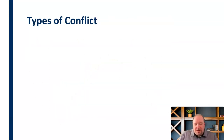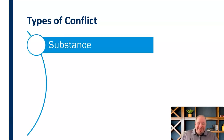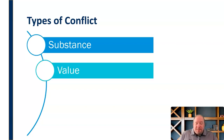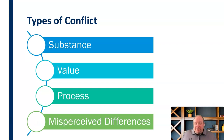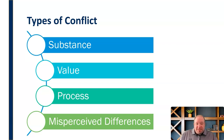There are a couple of different types of conflict. First, you can have conflict over substance — the actual details of a task or debate. You can have conflict over values — the worth of something and whether it meets the group's values. You can have conflict over process — how things are being done and the best way to accomplish them. And you can have conflict over misperceived differences, where conflict involves just the perception of differences, even when people may actually have commonalities.